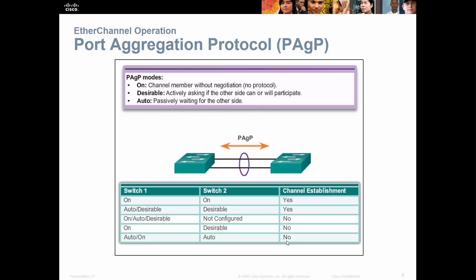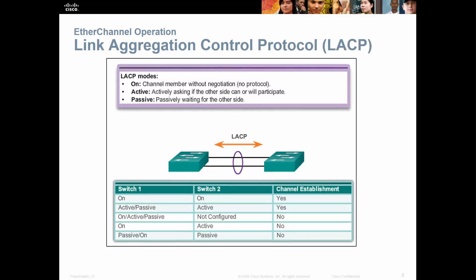PAGP is just one type. LACP — Link Aggregation Control Protocol — is another one. This is an open standard, non-proprietary, so you'll see this one most commonly on all the different random switches. On and on will result in a channel. Active and passive, where the other side is active, the channel will be created. If it's on, active, or passive and the other side is not configured, no link establishment. If one is passive and the other side is also passive, then no channel is created.